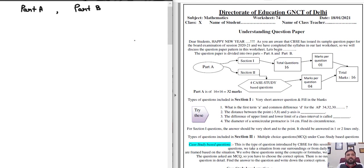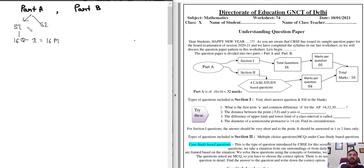Part A consists of two sections: Section 1 and Section 2. Section 1 consists of 16 questions, each of one mark, so total 16 marks are reserved for Section 1. Section 2 consists of four case study based questions, each of four marks, so 4 × 4 = 16 marks are reserved for Section 2. Overall, Part A consists of 32 marks.